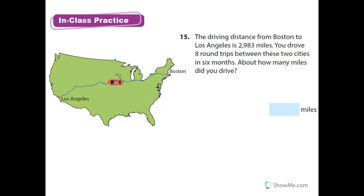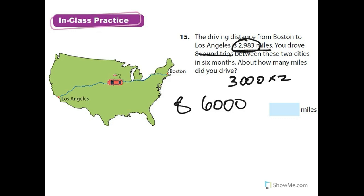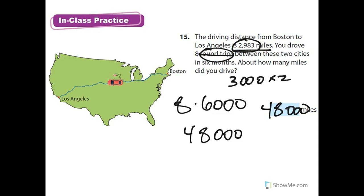So with all that estimation in mind, I want you to read and solve number 15. I hope you read this carefully and know that a round trip means you have to double the miles. Let's do some estimating — I'm going to say that's about 3,000 miles. 3,000 times 2 is 6,000. And 8 round trips: 8 times 6 is 48, with 3 zeros — 48,000. If you got 24,000, that's understandable — you didn't realize a round trip was double the mileage, because he goes there and back.